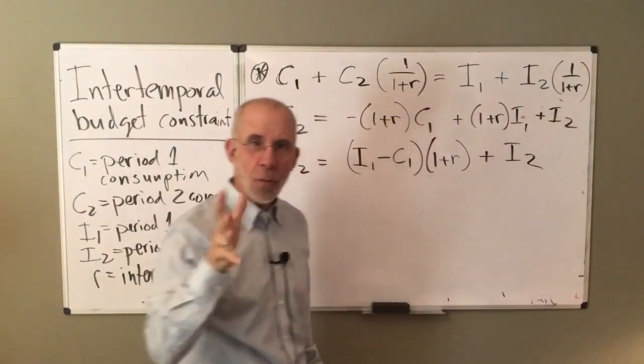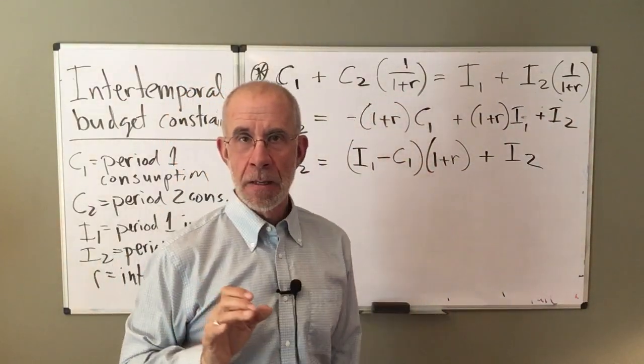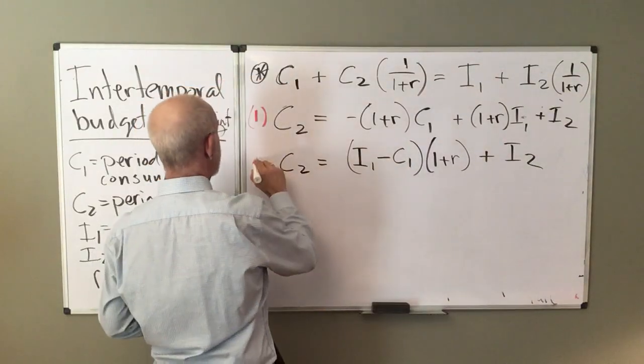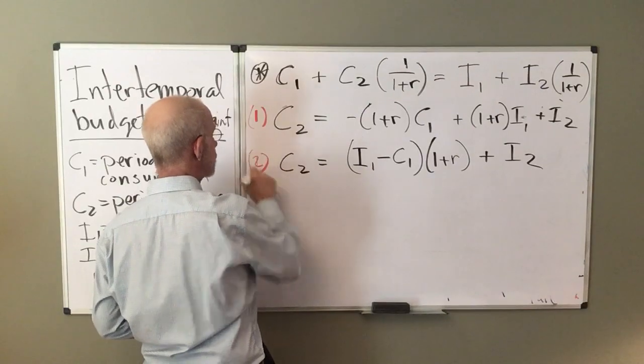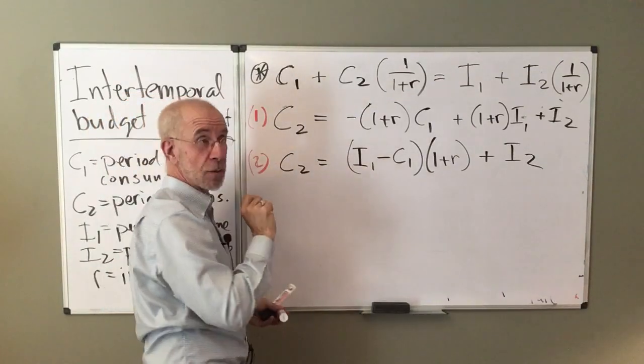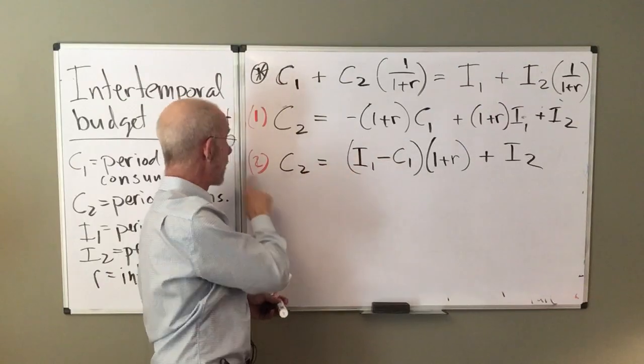So I've isolated C2 and what we have here is that your consumption tomorrow depends on this plus this plus that. Now I want to rewrite that a little bit. So I've got just a little algebra to get equation one.